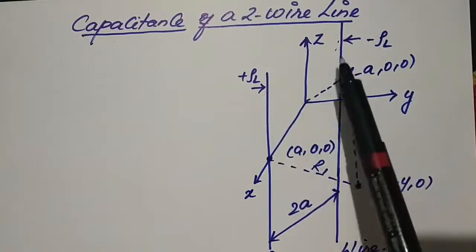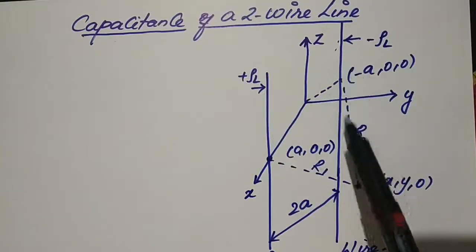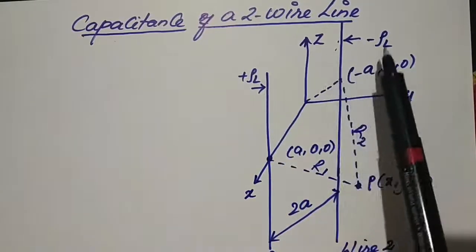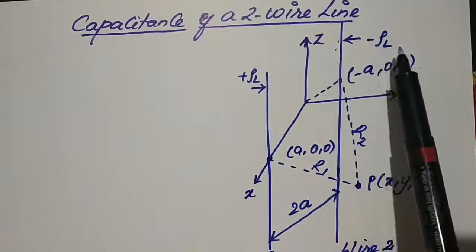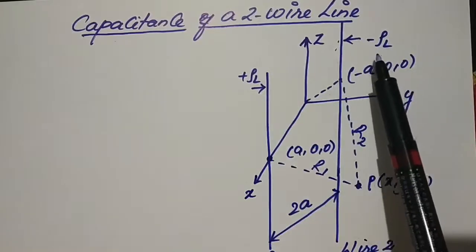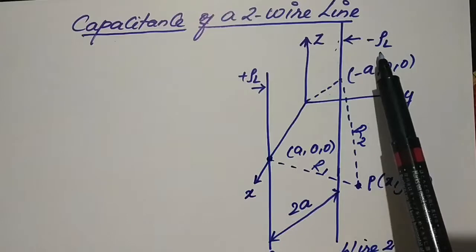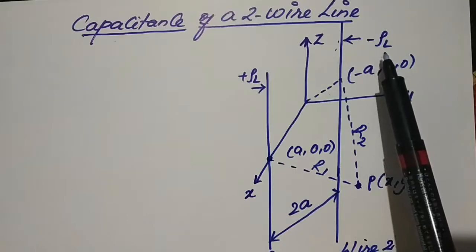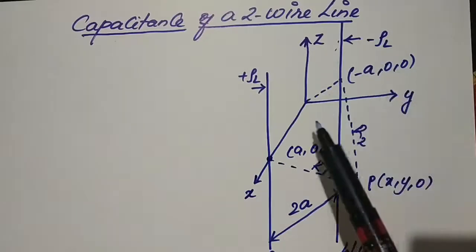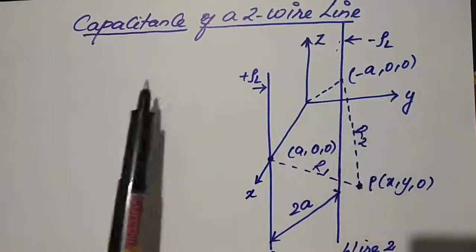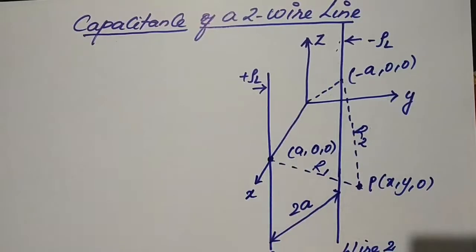For line 1, the line charge density is positive ρl coulombs per meter, whereas for this line — line 2 — the line charge density will be minus ρl coulombs per meter.